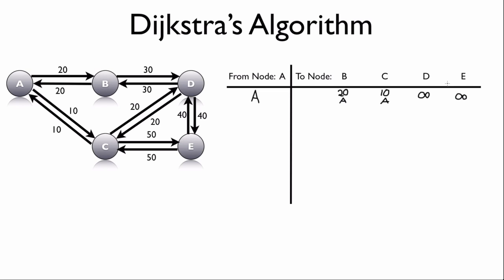Node A is our starting point, so there's nothing to find about it. Next, we ask which remaining node has the lowest cost. Node C has a cost of 10, which is the lowest. Since C already has the lowest cost of any directly connected node, there's no way it would be more economical to reach C via another node — so C's shortest path is confirmed as directly from A.